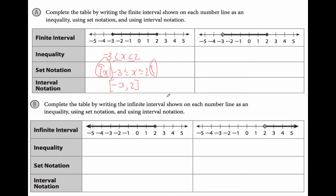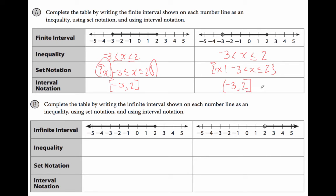Now the interval to the right covers the same region, from −3 to 2, but this time negative 3 is not filled in and 2 is filled in. So the inequality becomes: −3 < x ≤ 2. Set notation is just the brace with 'x such that' followed by that inequality. For interval notation, the left endpoint is −3 with a parenthesis (open), and the right endpoint 2 gets a bracket (closed): (−3, 2]. You can mix and match open and closed endpoints.